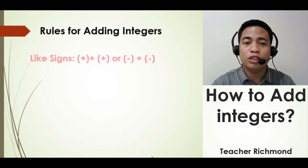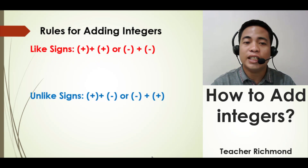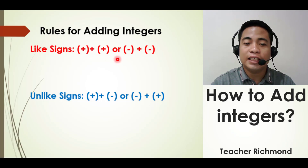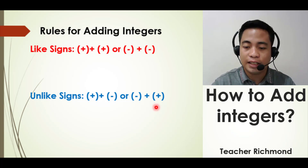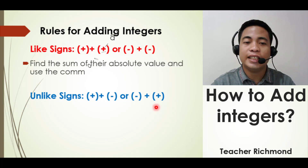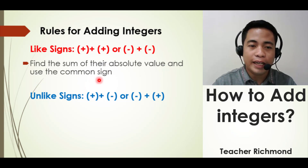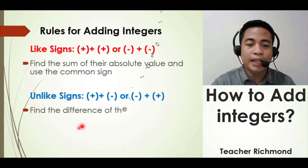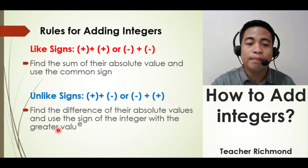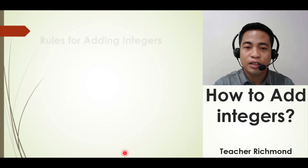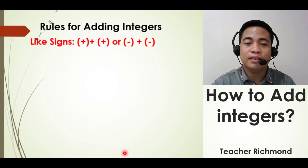We are going to proceed now to the rules of adding integers. We have two rules: the first rule is the rule for like signs, and the second rule is the rule for unlike signs. For like signs: find the sum of their absolute values and use the common sign as the sign of your answer. For unlike signs: find the difference of their absolute values and use the sign of the integer with the greater value.